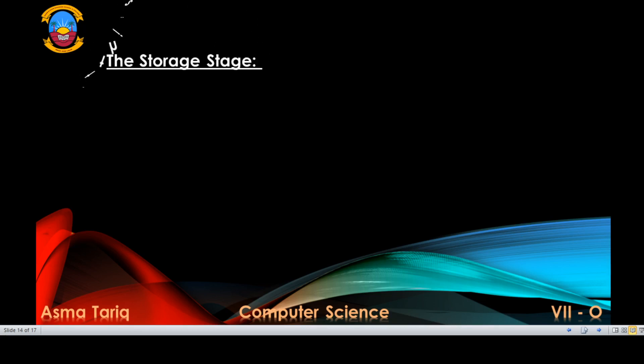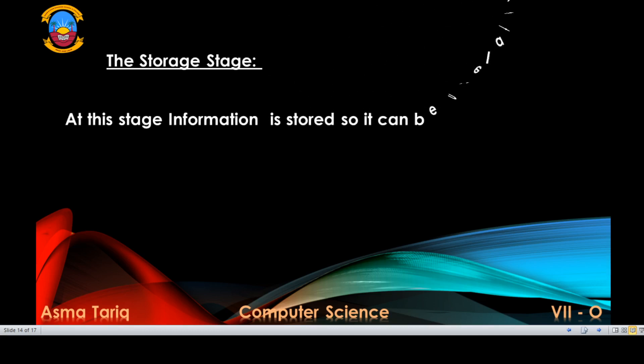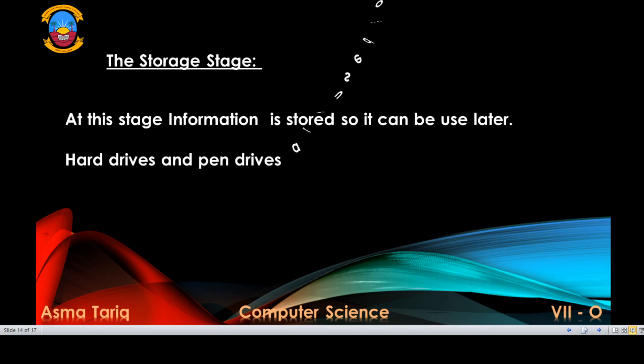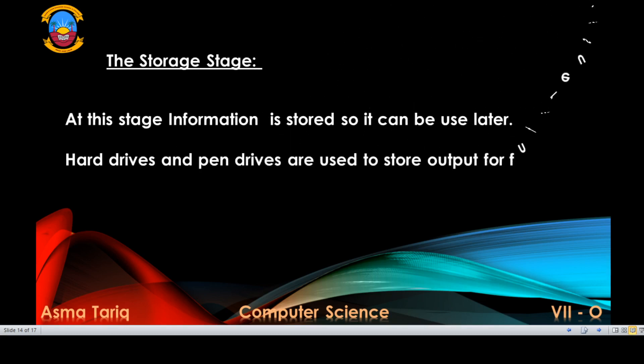The next stage is the storage stage. A lot of time can be saved if output can be stored for future use. For example, a list of daily temperatures for one week can be used next year to compare average temperatures for two years. The storage stage is where information is stored so that it can be used later. Hard drives and pen drives are used to store information.